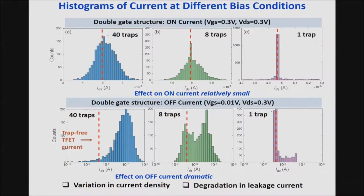After many runs, one can get statistics on the variation in current for different scenarios. When the device is essentially on — at relatively high VGS and VDS — there is little effect: the average current changes little from ideal and there is a spread of about 10%. For the off-current with 40 traps, however, there is an increase by two orders of magnitude and a range of about a factor of 5. This is a very significant effect.